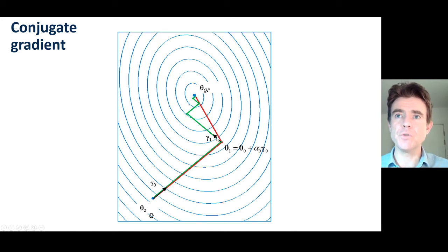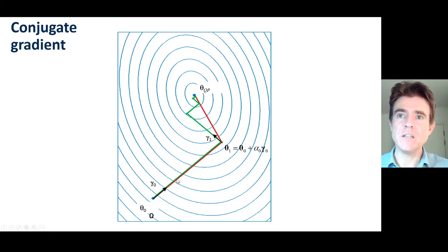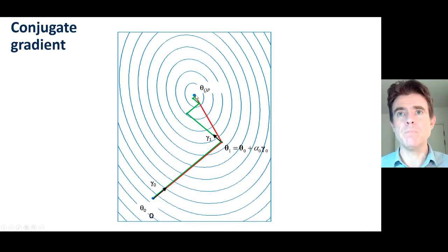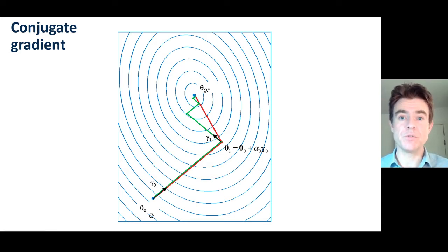Taking those two — gamma zero plus gamma one in this example — and then optimizing to minimize the cost function neatly takes us directly to that minimum of this quadratic programming cost function, basically least squares. It takes us there in just two steps — very efficient.